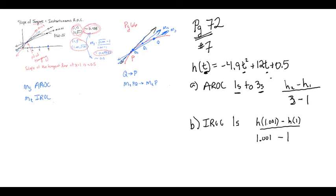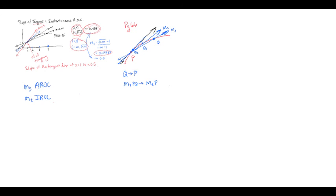The textbook wants you to go through quite a few calculations — substitute in 3 seconds, then 2 seconds, then 1.5, 1.1, and 1.001 — and you can see how that whole idea of Q approaching P works, and how the slope of the secant approaches the slope of the tangent line. But really, jumping straight to a very close point like 1.001 does the job with a lot less calculation, as long as you get the gist of what we're trying to do.